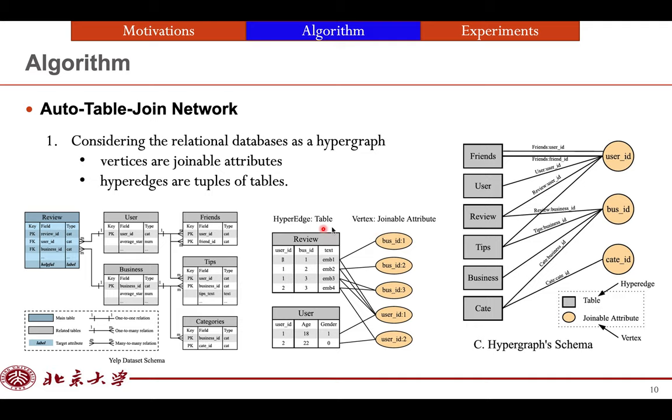So one tuple contains some joinable relations, and it connects with them. This is the way we build the hypergraph. So if we induce those rules to the whole hypergraph, we can draw a schema of the hypergraph. On the right is the joinable attributes as vertices, and on the left part is the tuples of table as hyperedges.